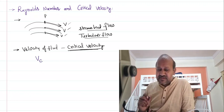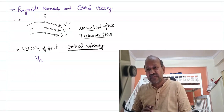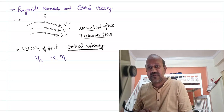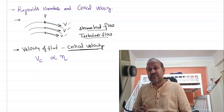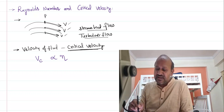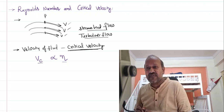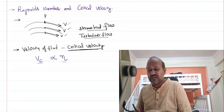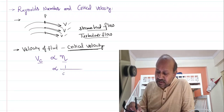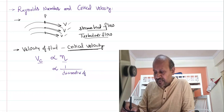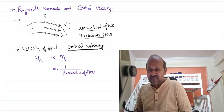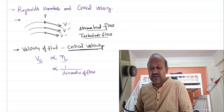It is observed that critical velocity is directly proportional to the coefficient of viscosity. The coefficient of viscosity is a measure of the viscous nature of the fluid — the more viscous the fluid, the higher the critical velocity at which it converts from streamlined to turbulent flow. It is also noticed that critical velocity is inversely proportional to the diameter of the fluid flow — a bigger flow has a lesser critical velocity, and a shorter flow has a higher critical velocity.